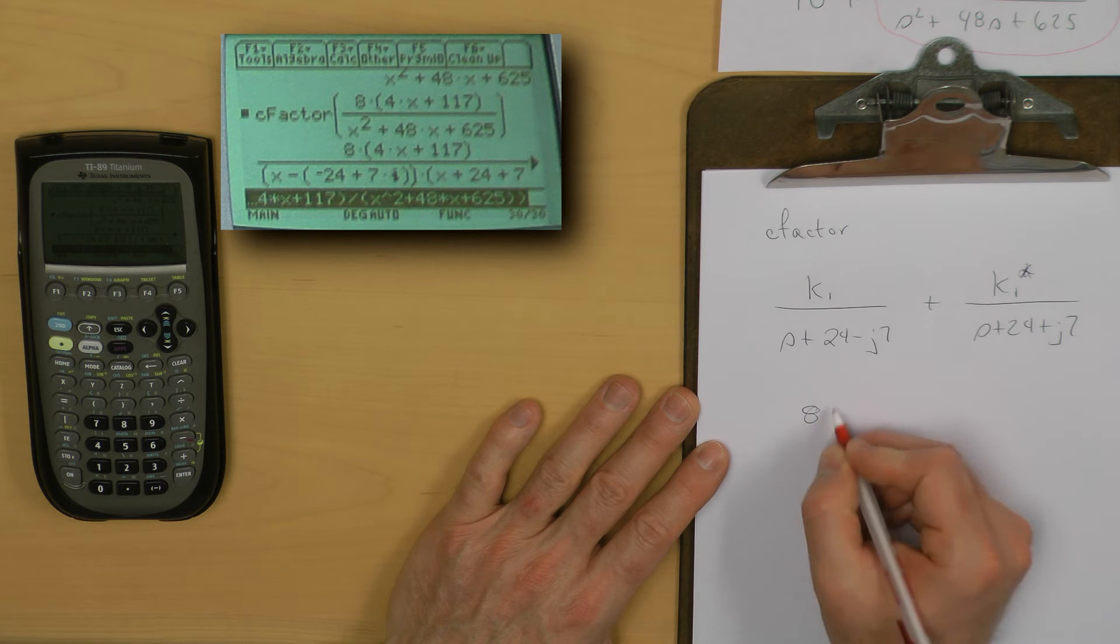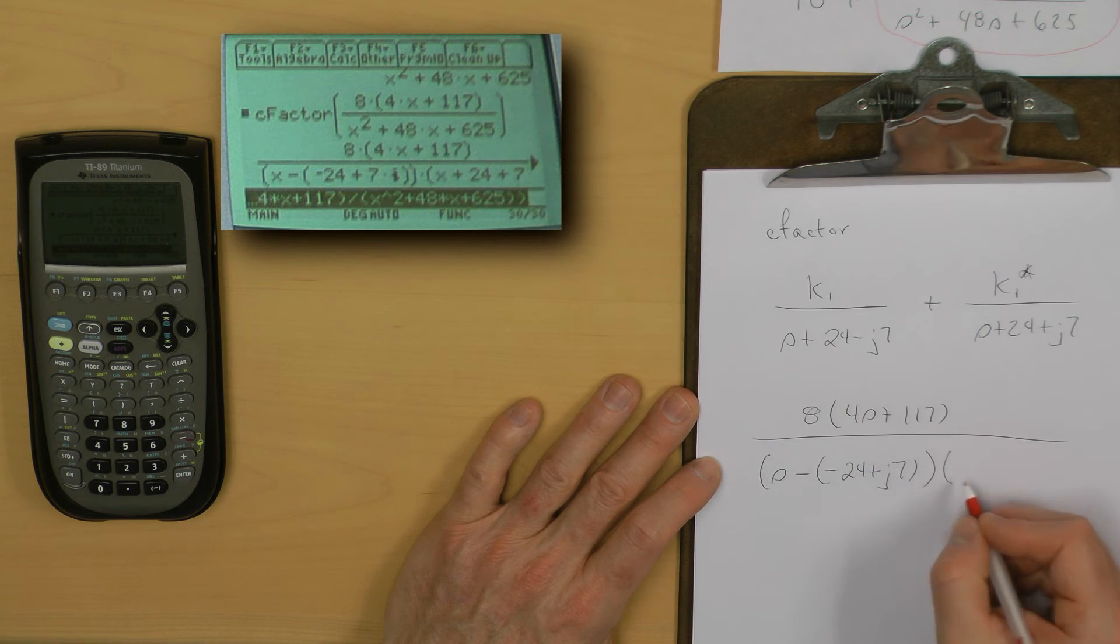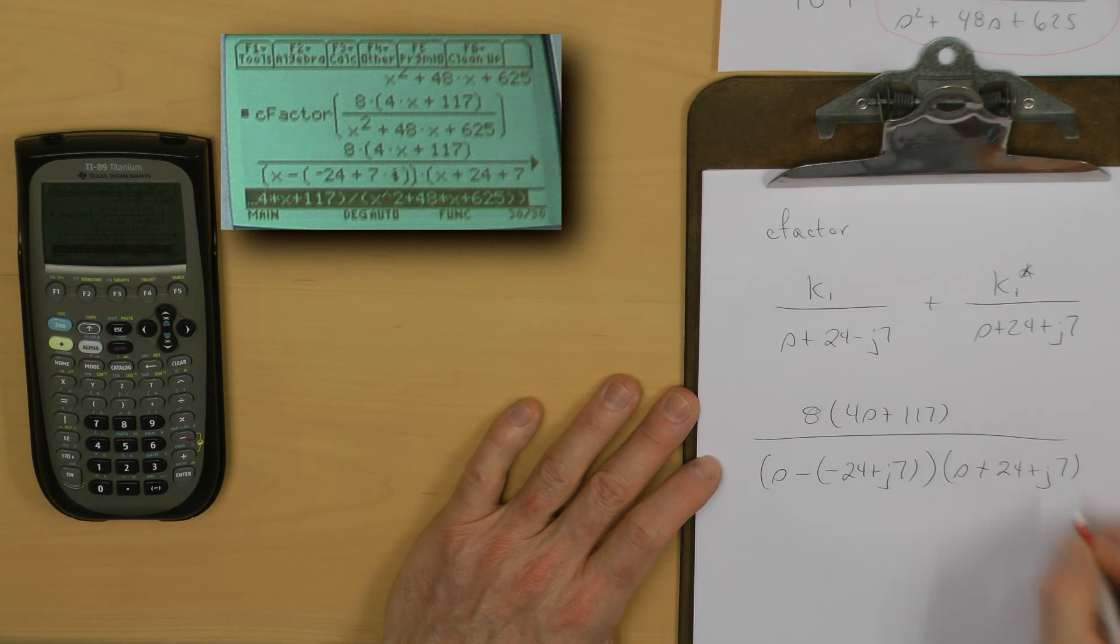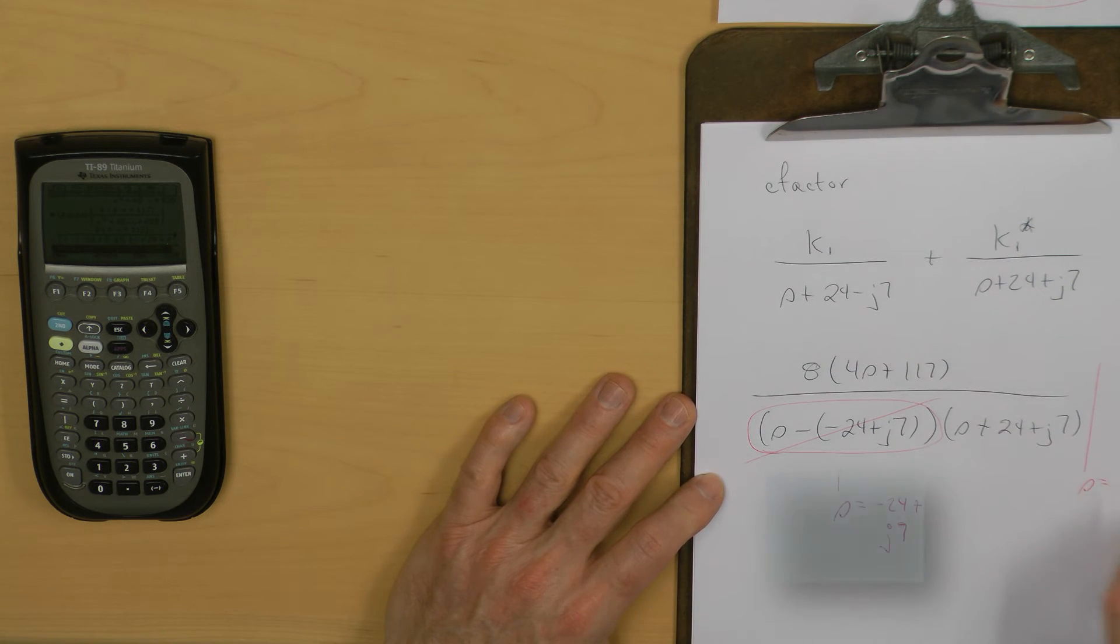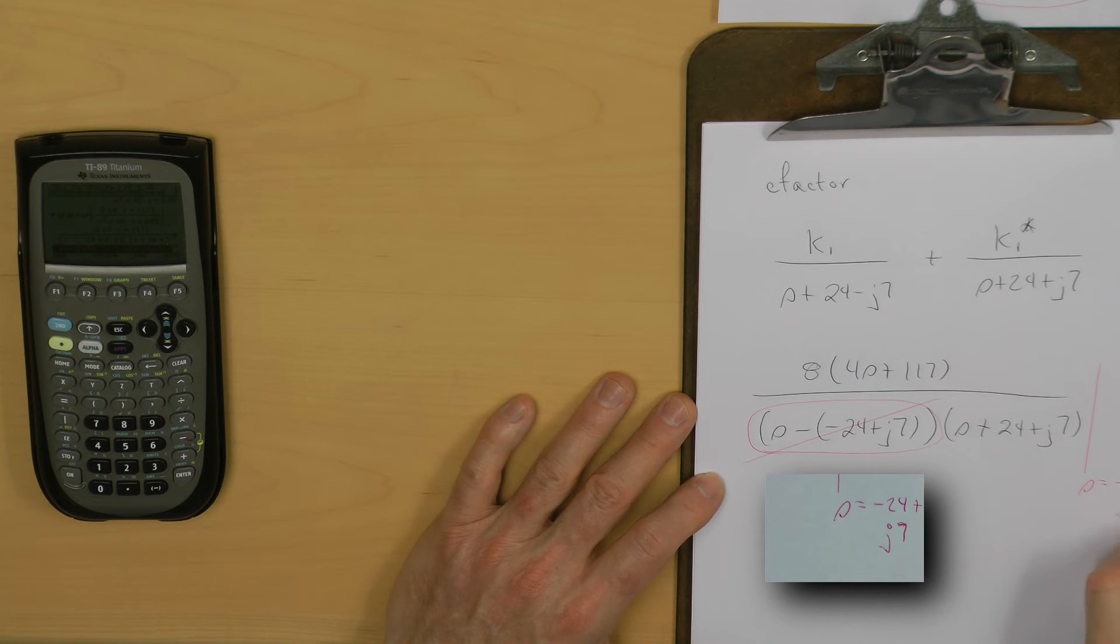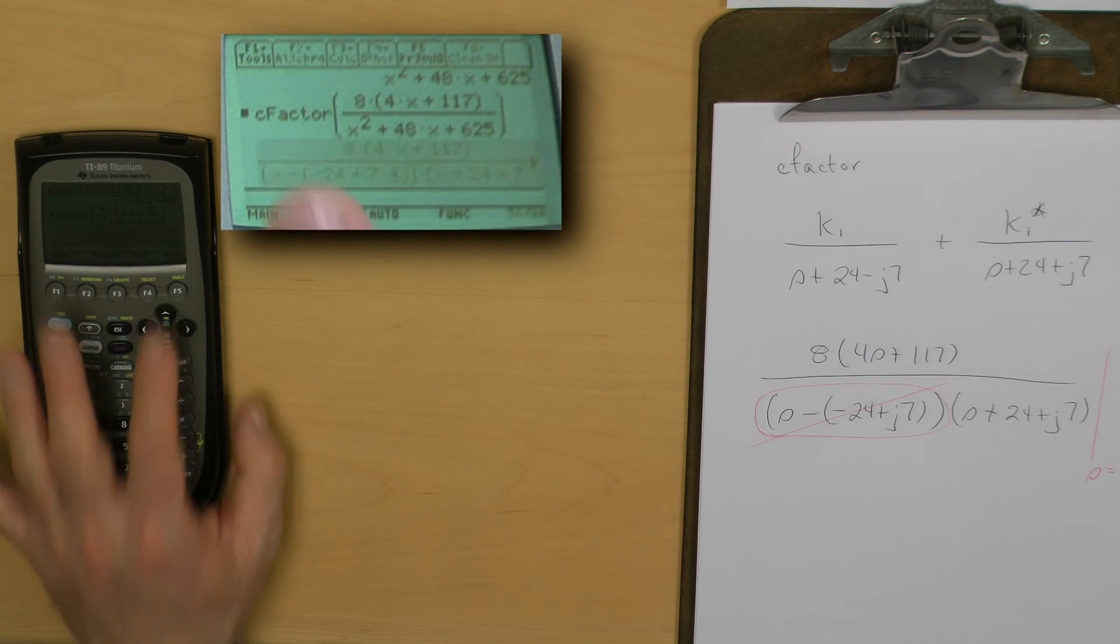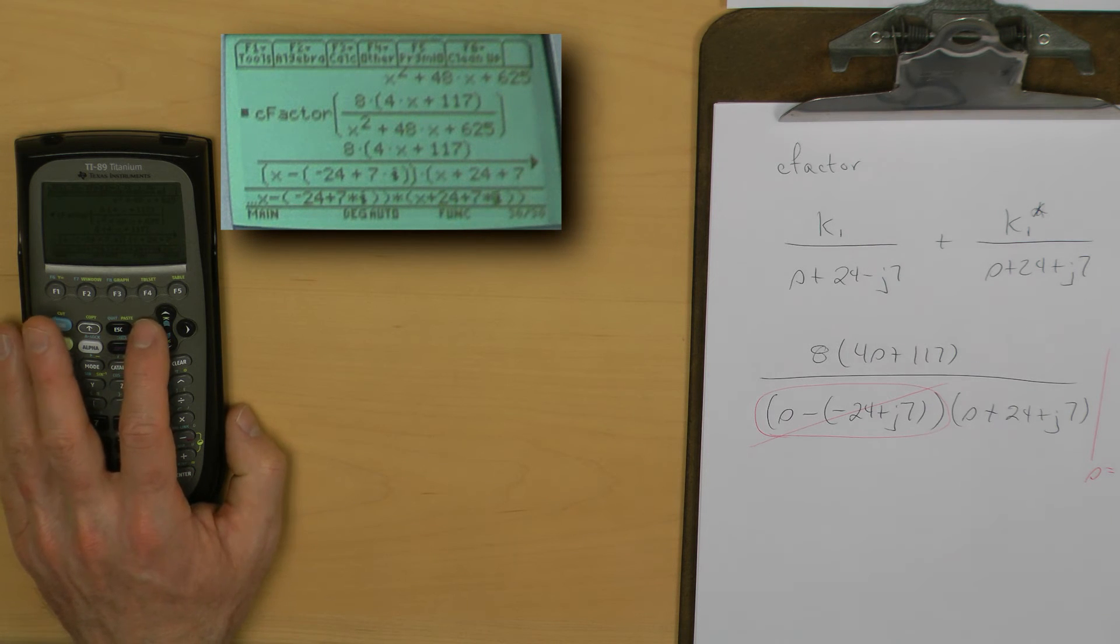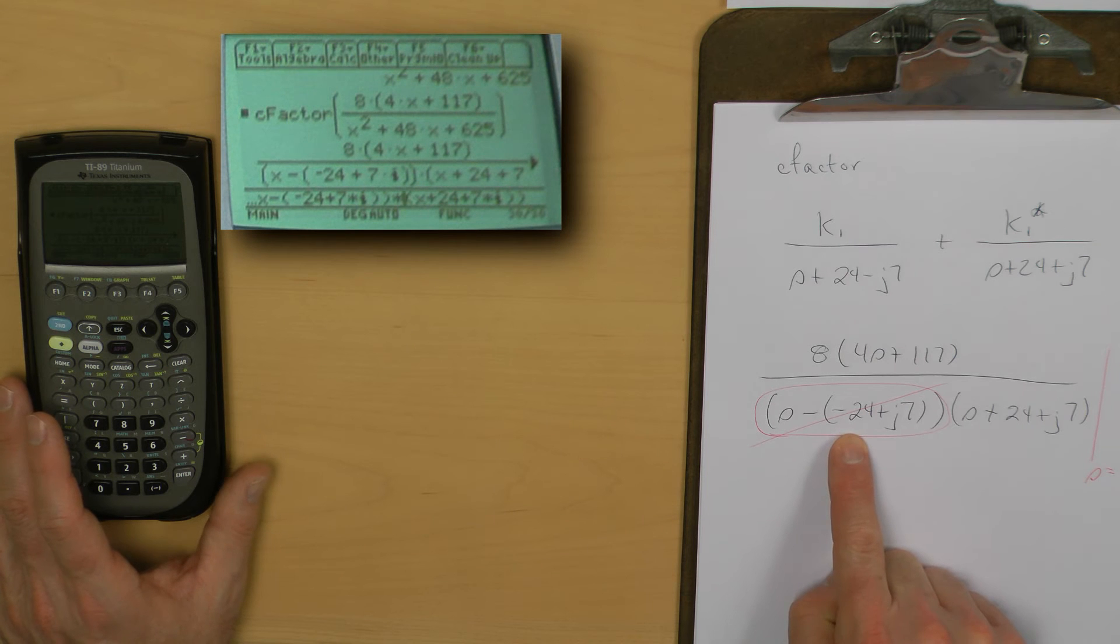What the calculator is showing me is that it has 8 over 4S plus 117 all over this S minus and then it has a minus 24 plus J7 piece and then it has an S plus 24 plus J7. What I'm going to do in the calculator is actually effectively multiply through by this particular factor. To do that, I'm really going to just go in and cut that out, and then I'm going to evaluate this resulting expression at the value S equal to minus 24 plus J7.